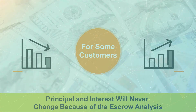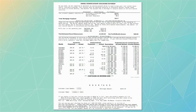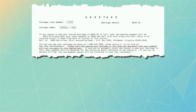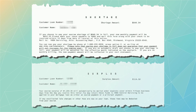Remember, your escrow disclosure will list the results of the analysis at the bottom of the page. There are two possible results: shortage or surplus.